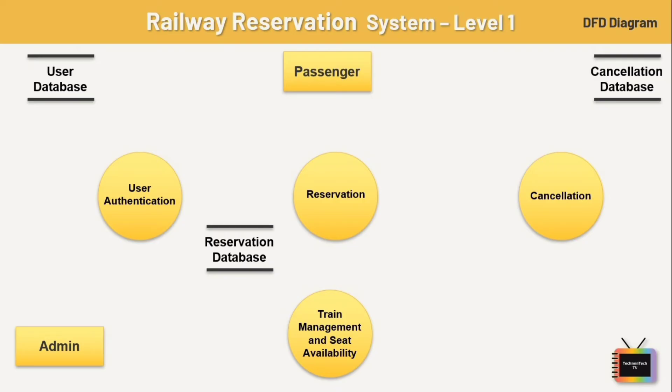Next we have the cancellation database — it records details of cancelled reservations for refund processing and reporting purposes. Last we have the train management and seat info database — it stores information about trains including schedules, routes, and seat availability.